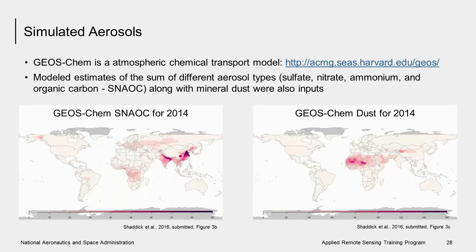This is an atmospheric transport model that simulates both meteorology and the chemistry of the atmosphere, including key aerosol groups such as sulfates, nitrates, ammonium, organic carbon, black carbon, mineral dust, and sea salt. PM2.5 is simply the dry mass of aerosol with an aerodynamic radius less than 2.5 microns and can be comprised of any combination of these aerosol types. The map on the left shows the sum of simulated sulfate, nitrate, ammonium, and organic carbon, or SNAOC, for 2014 from GEOS-Chem. The map on the right shows simulated dust from GEOS-Chem for 2014. These two quantities were used as inputs to the DMAQ model.